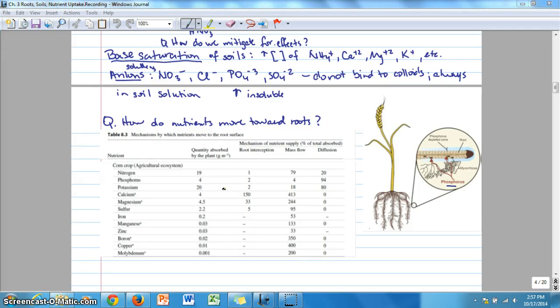As we finished discussing base saturation and the fertility of soils last time, we then introduced a component of the soils we hadn't talked about, which were the anions. We highlighted various anions that you can see, and also the idea that some are more soluble than others.